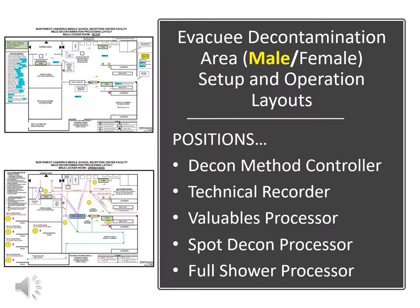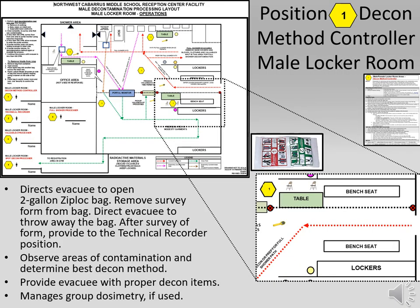Evacuees move to the male or female decontamination area for final processing. Both are identical in setup and operation; this training addresses the male side only. Two large layout drawings are available: one for setup and one for operational pathways and detail instructions. The decon method controller is the first person to greet the evacuee, requesting them to open the two-gallon Ziploc bag to retrieve the completed survey form prepared by the technical recorder in the clean area. This position determines the best decontamination method based on contamination location and amount.